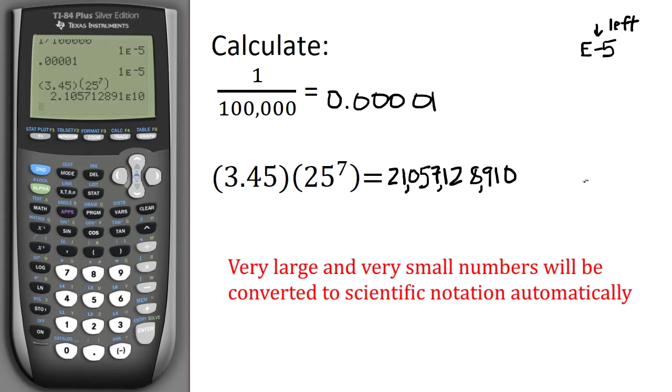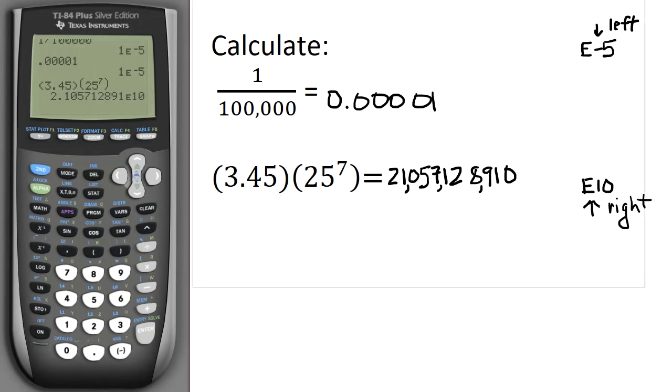So remember here when I see this notation, in this case E10, it's positive, and that means to move the decimal place right by 10 units or whatever comes after the E. Don't forget your scientific notation.